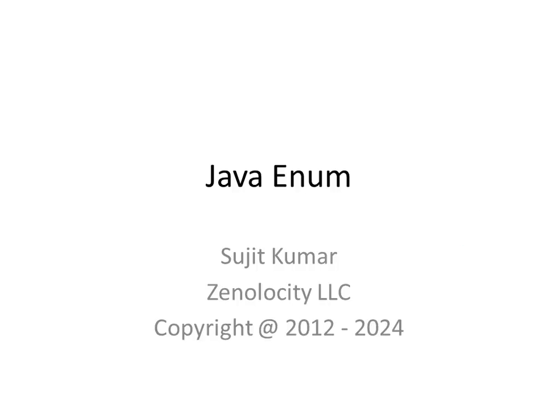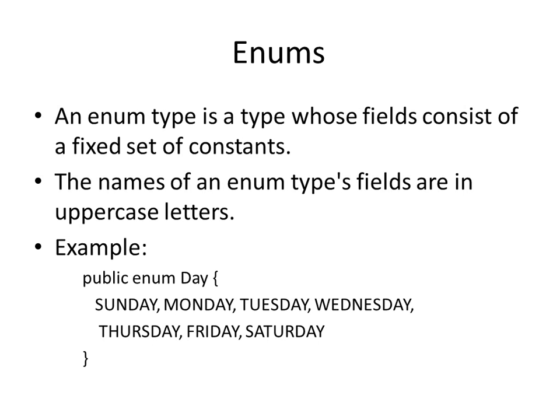In this class, we are going to see what enums are in Java. Enums have been introduced from Java 1.5. An enum is basically a type whose fields are a fixed set of constants. So because they are constants, the names of the enum type fields should be in uppercase letters. Generally, it is a convention to represent constants as uppercase letters.